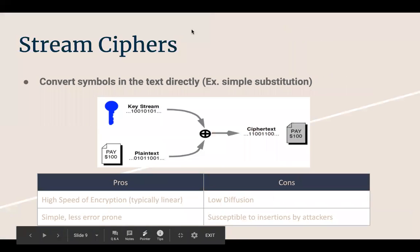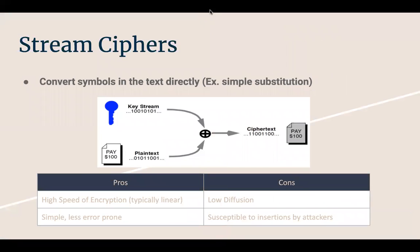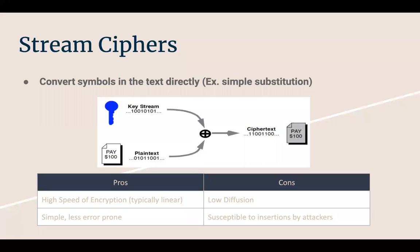Stream ciphers are an example of simple substitution. You take a key stream — typically an arbitrary string of zeros and ones — and XOR it with the plaintext to create a ciphertext. The pros are very high speed and low error-proneness due to simplicity, but it is low in diffusion and it's easy for attackers to insert random numbers into the ciphertext and corrupt the message.